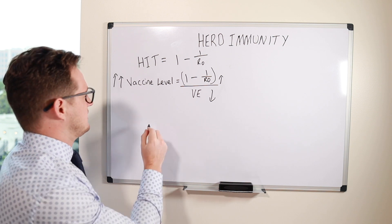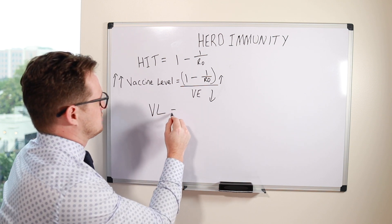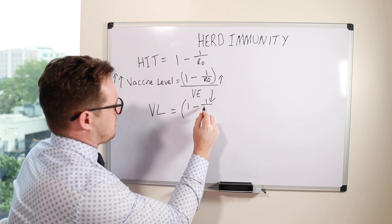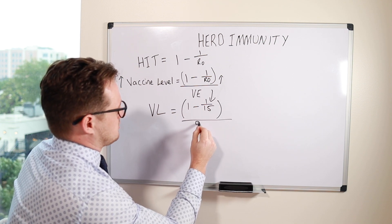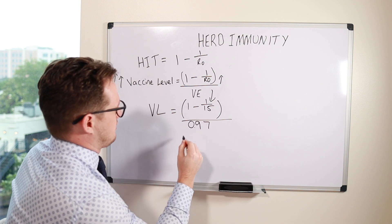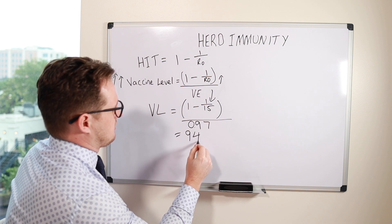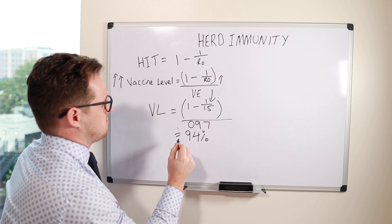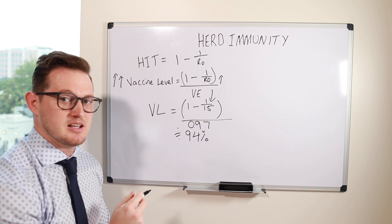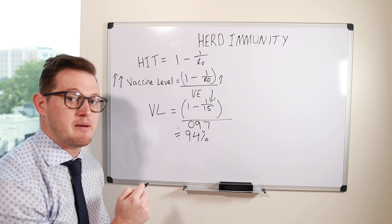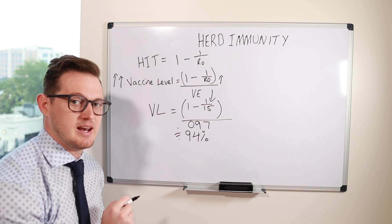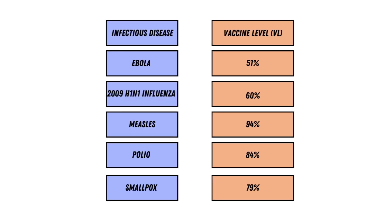Let's use measles as our example to calculate vaccine level. For measles, the R0 is approximately 15 and the vaccine efficacy is approximately 97%, which comes out to approximately 94%. This means 94% of the population has to be vaccinated to achieve herd immunity with measles — an extremely high number, which is perhaps why as a global community we have still not been able to eradicate this disease. Here are the vaccine level estimates for the other infectious diseases we've been focusing on — as you can see, there is a very wide range.